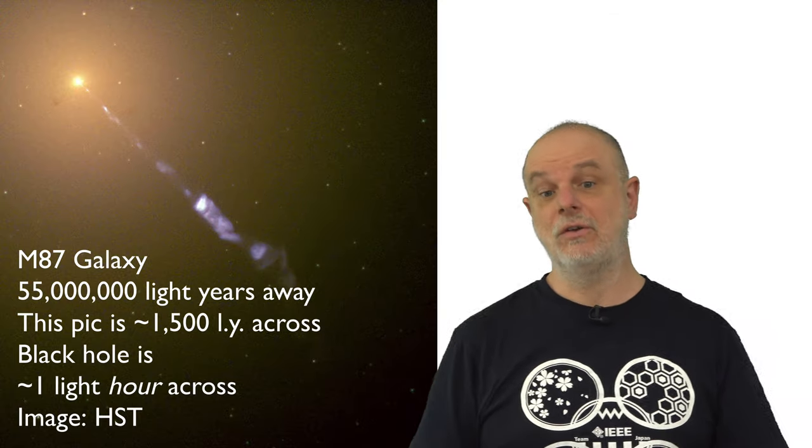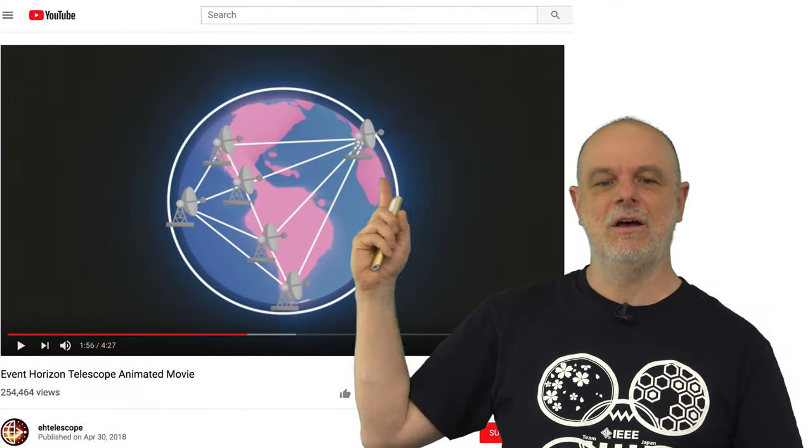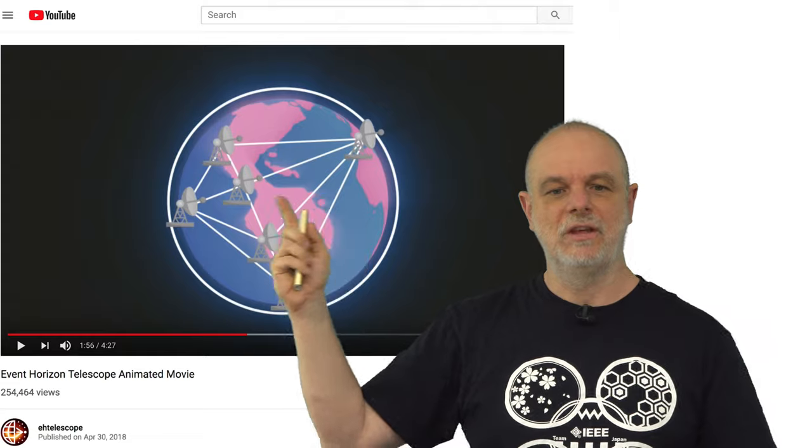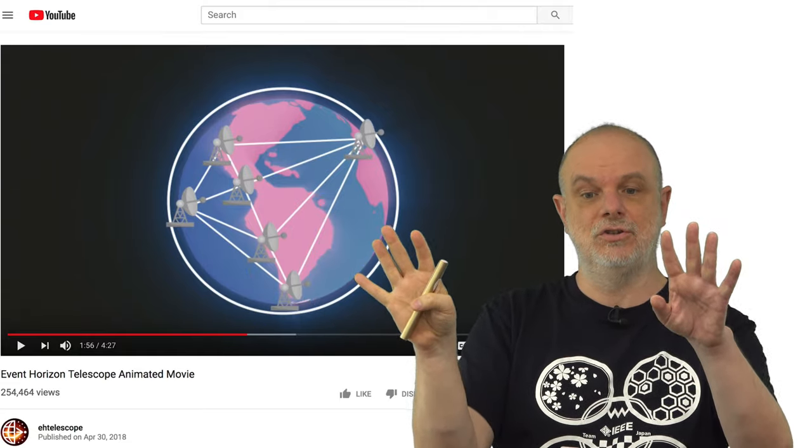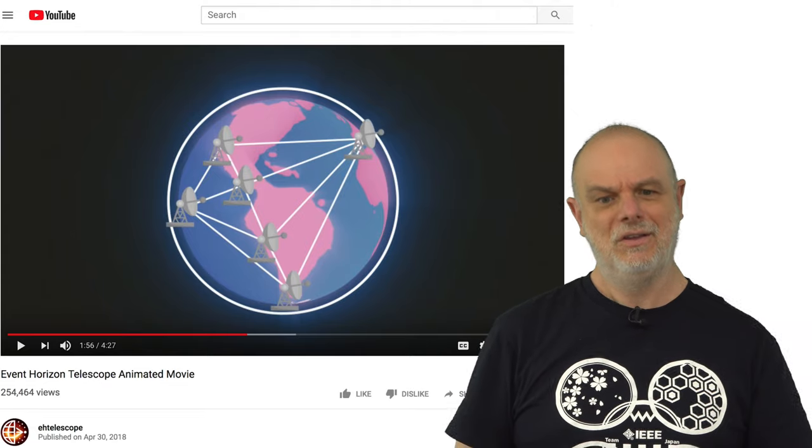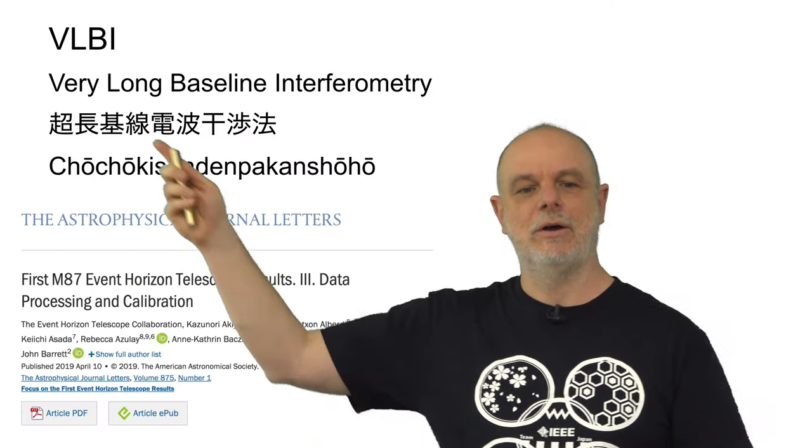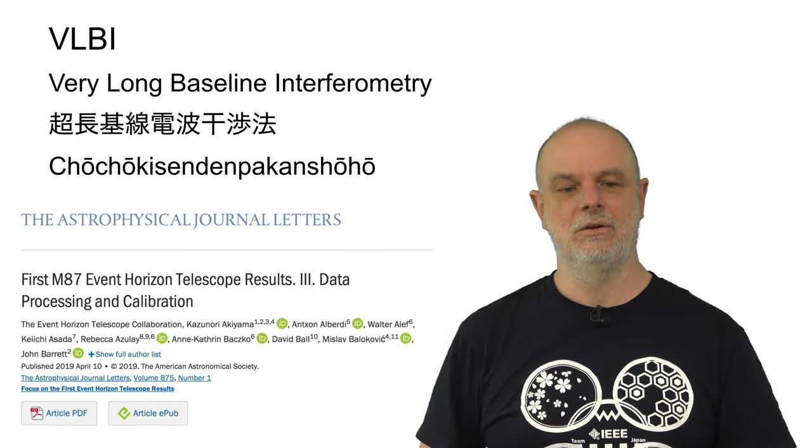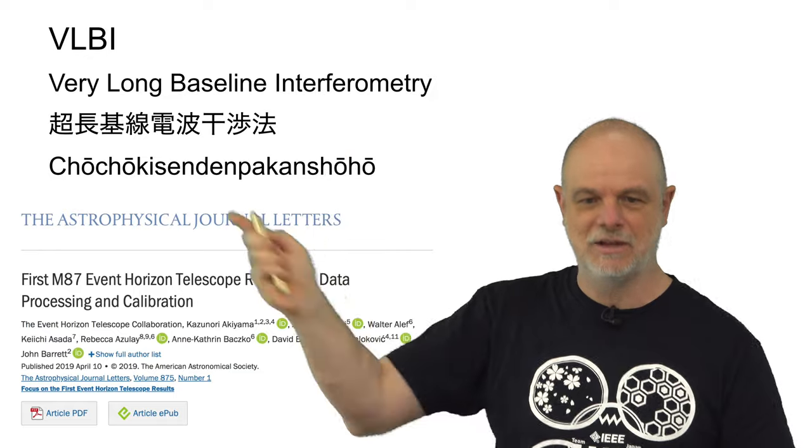Well, they used this process called interferometry, and they did it at the scale of the entire planet. So, they created an interferometer, not just between those two dishes that were standing next to each other, but among a set of dishes that spans the entire globe, in a process called Very Long Baseline Interferometry, or in Japanese, Chou Chou Kisen Dempa Kan Shou Ho.